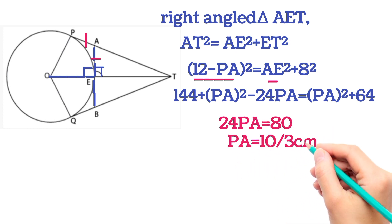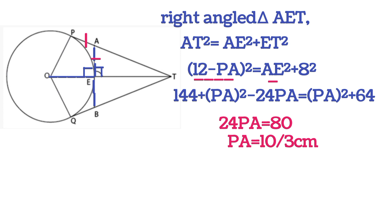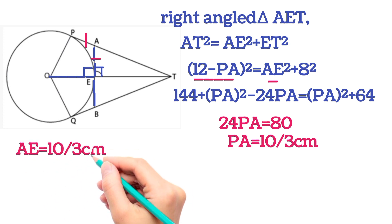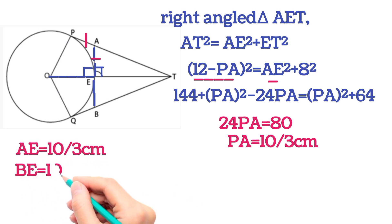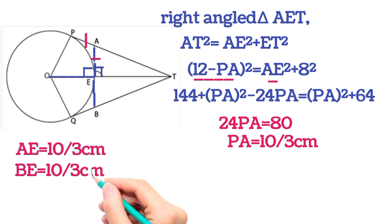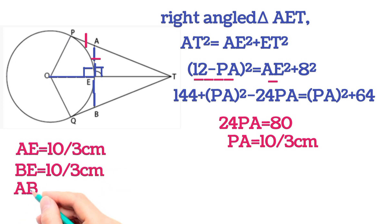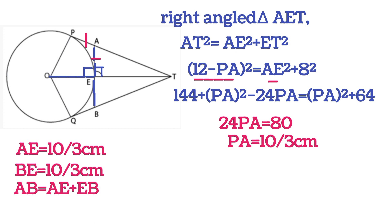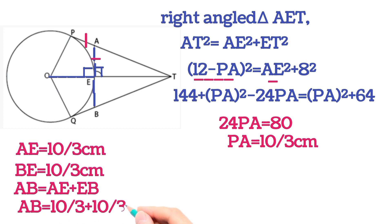Simplifying: 24·PA = 80, so PA = 10/3. Since PA = AE, we get AE = 10/3 centimeters. Similarly, EB = QB = 10/3 centimeters.